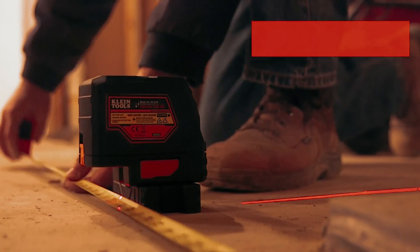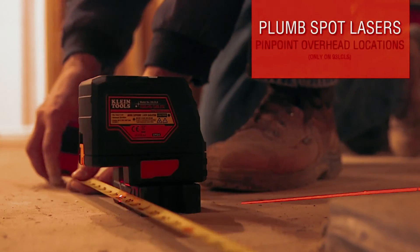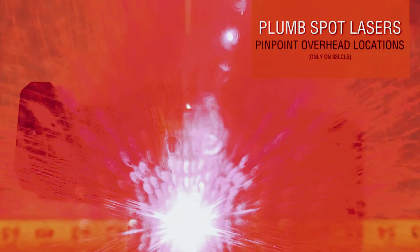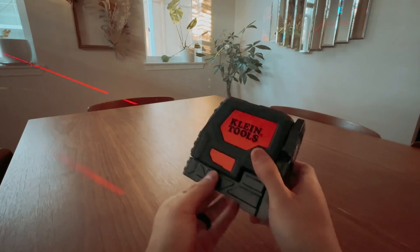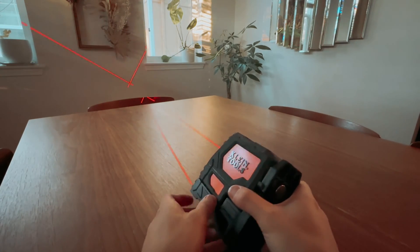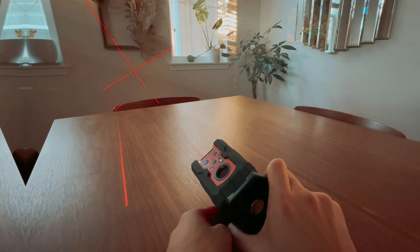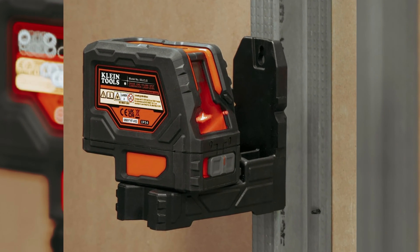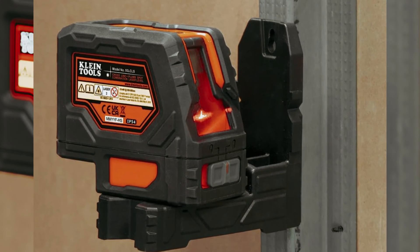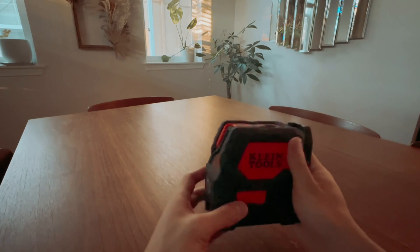Overall, the Klein Tools 93LCLS Laser Level is a powerful and reliable tool for a variety of alignment tasks, whether you're a professional tradesperson or a DIY enthusiast. With its versatility, durability, and ease of use, this laser level is a must-have for anyone seeking precision and efficiency in their projects.